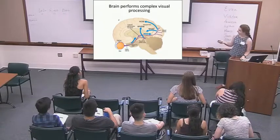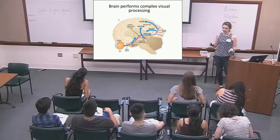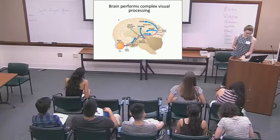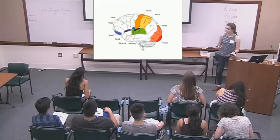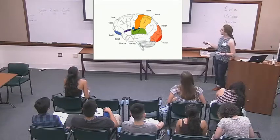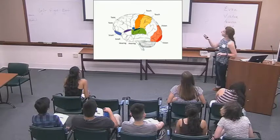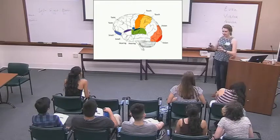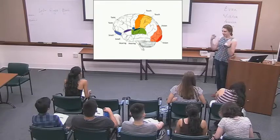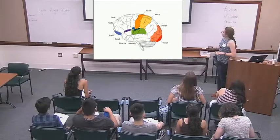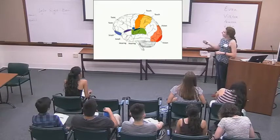After the occipital cortex, that information gets sent to all kinds of other places in your brain to process the different parts and put together a visual image. This is just for vision, but all the other senses also have designated places in the brain where they're processed. For example, touch is processed in the somatosensory cortex as shown by the homunculus, and there are also places for hearing, taste, and smell.